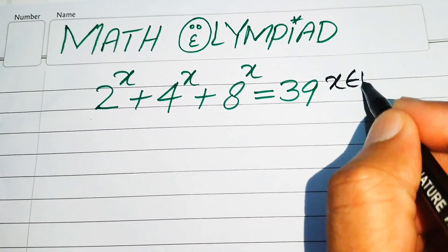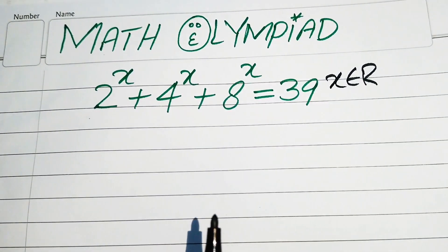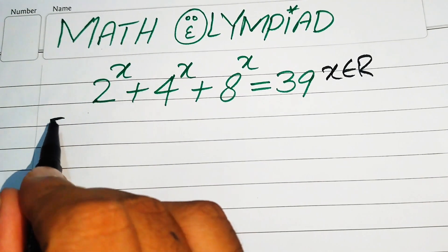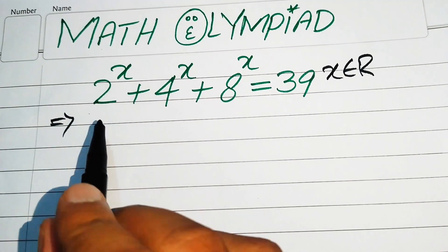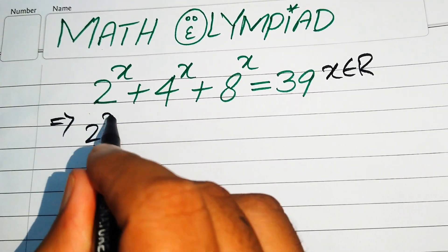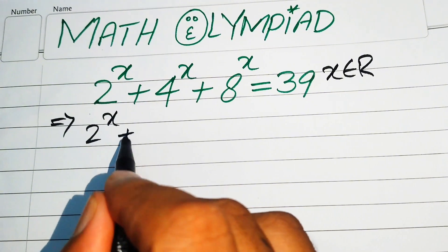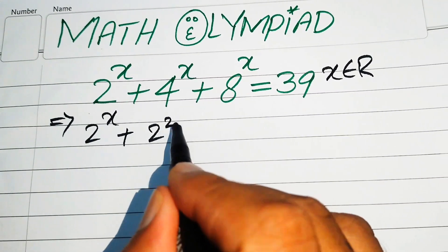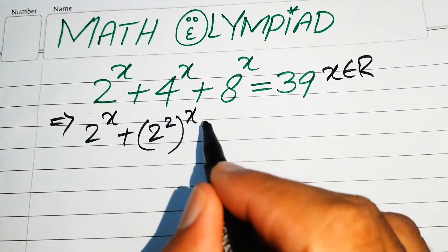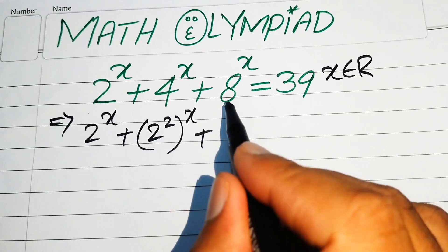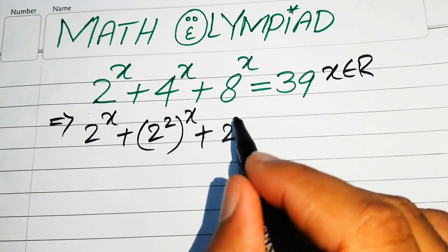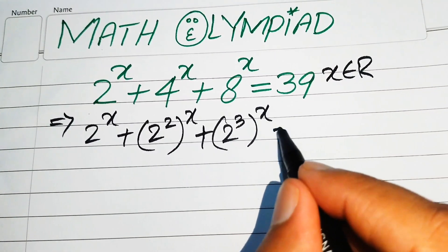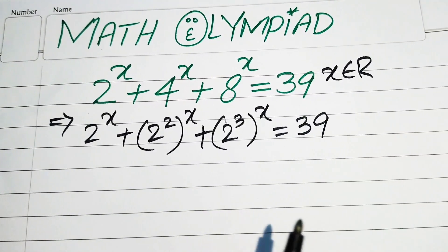Here x belongs to the real numbers. The very first step we are going to do is rewrite this equation: 2 to the power of x, and we write 4 as 2 squared with its whole power x, and we write 8 as 2 cubed with its whole power x, equals 39.